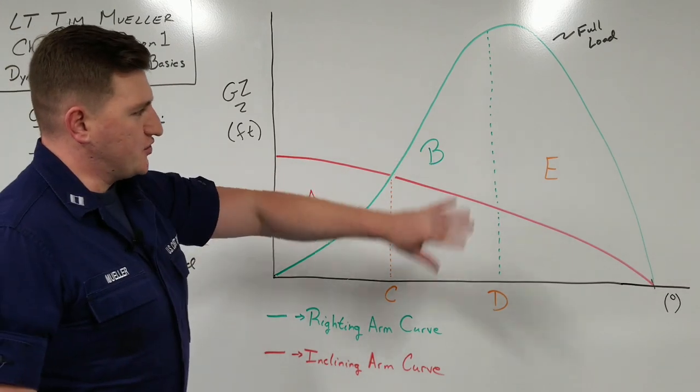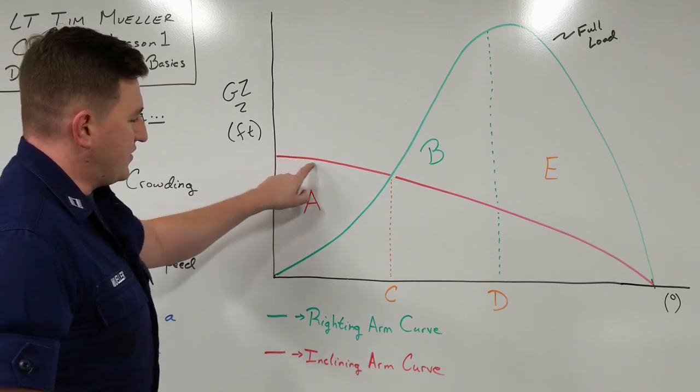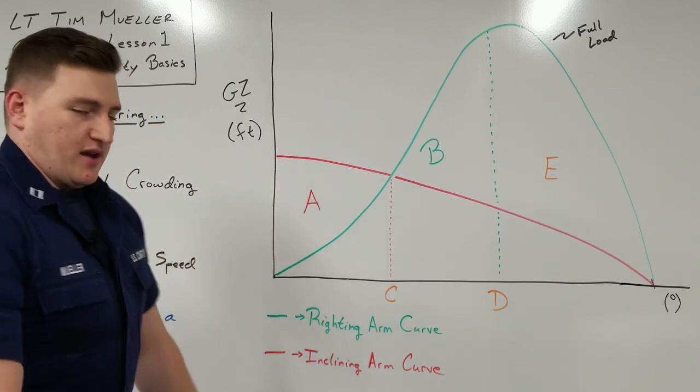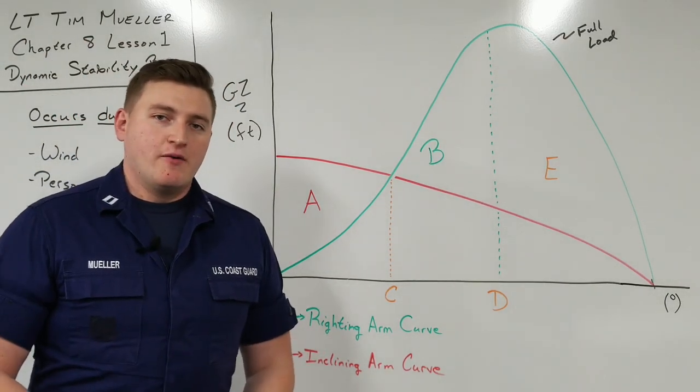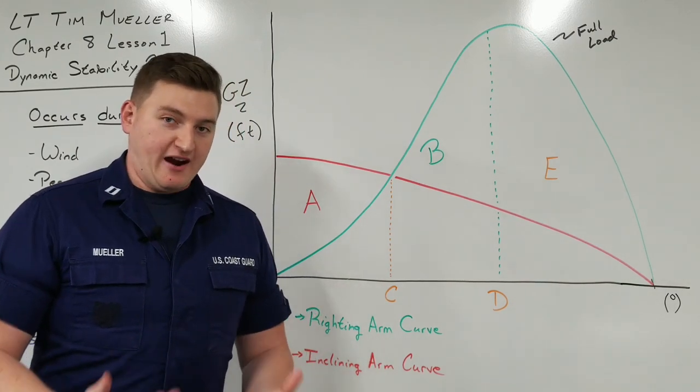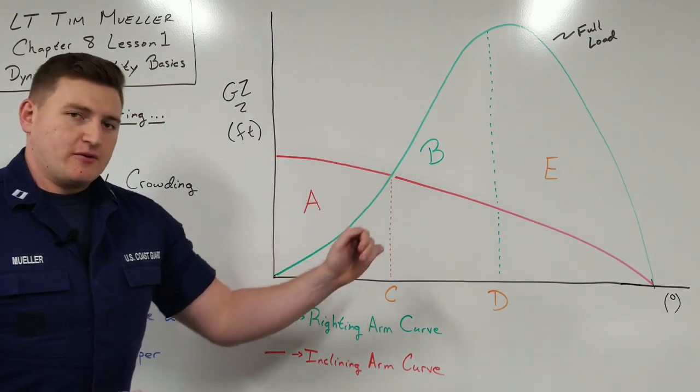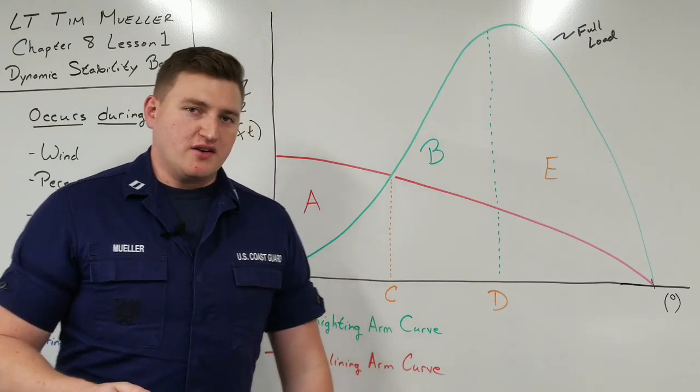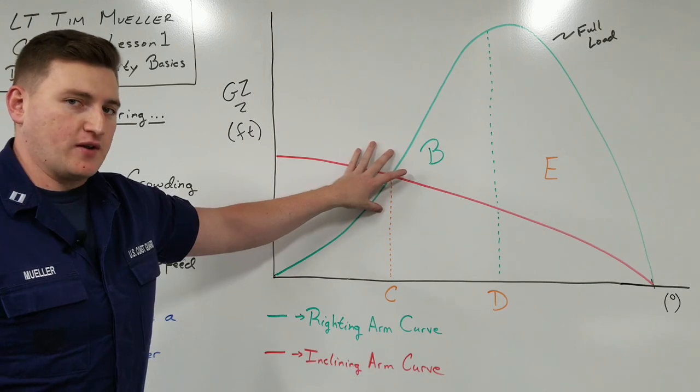So to start off explaining this chart, we have this A here. So A is this triangle where the inclining moment is greater than the righting moment. This is going to be our inclining energy. When we talk about energy, we have to use a term in calculus called integration, where we basically find the area under the curve. But in order to do all these lessons in this chapter, we're not going to use calculus itself. We're going to use some very close approximations so we can get quick answers in case we actually need to find this information very quickly.